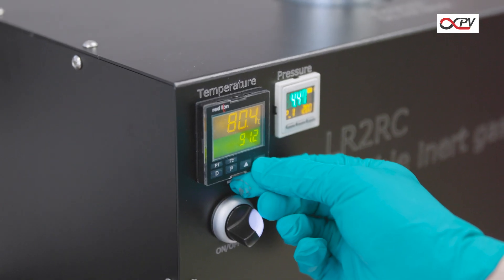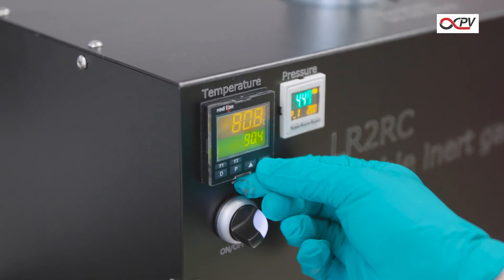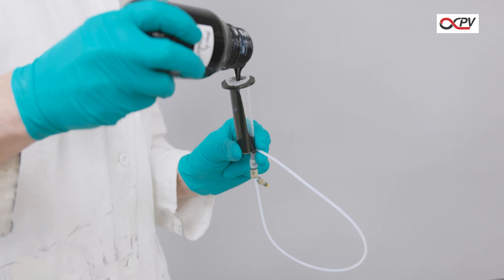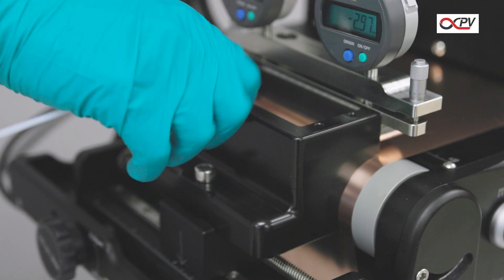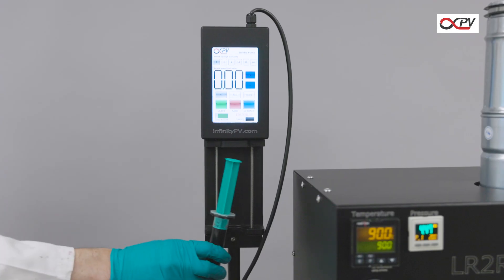Set the oven to your desired temperature, then prepare your ink or slurry by filling a syringe, connecting it to the slurry coater, and inserting it into the syringe pump.